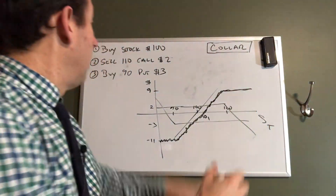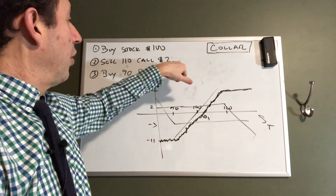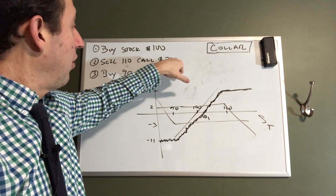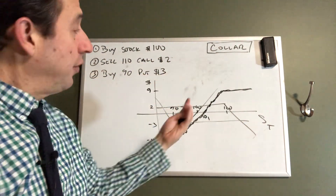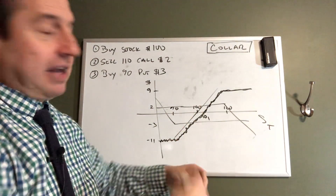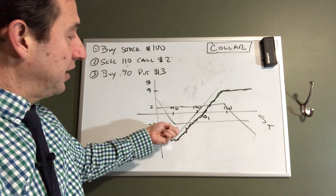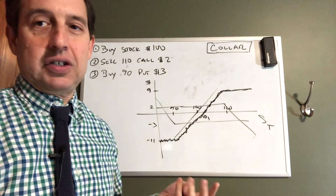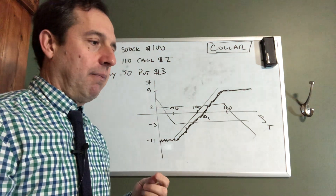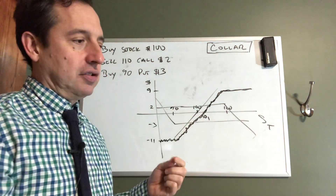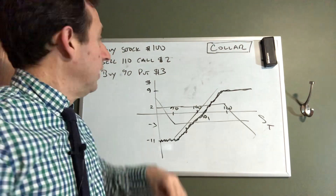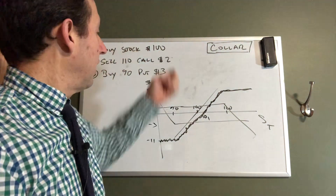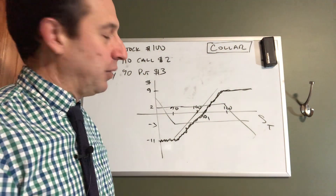If the prices were a little different — say we sold the call for $3 and bought the put for $2 — then the break-even would be 99 and the max gain and max loss would be reversed: max loss would be $9 and max gain would be $11. The way I approach the calculations is to find the net cash flow on the options and then incorporate that with the stock.